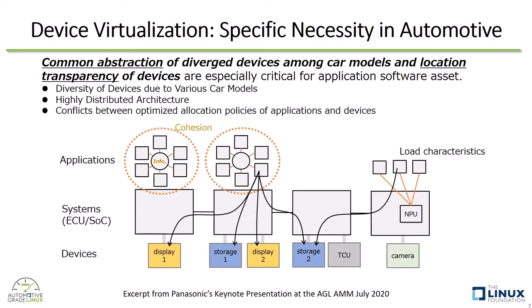The second necessity is rather complex. Automotive computing architecture is currently a pretty much distributed one consisting of many ECUs. In this environment, allocation policy of a particular application software to a specific ECU and allocation policy of a particular device to a specific ECU are different. Optimal location of an application could be decided by cohesion of functionalities, or by load characteristics such as vector-heavy or neural network-heavy workloads. On the other hand, optimal location of devices could be decided by physical distance to ECU or by specific peripheral interface channels. So application software and relevant devices do not necessarily reside on the same ECU, and this varies among car models or vehicle generations.